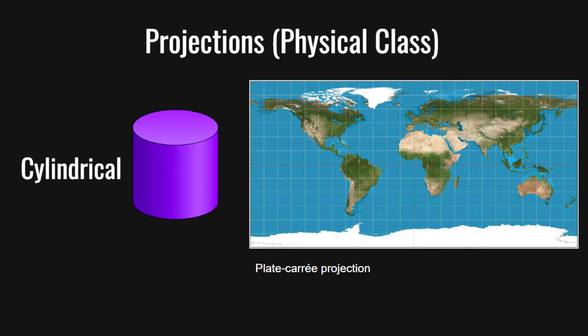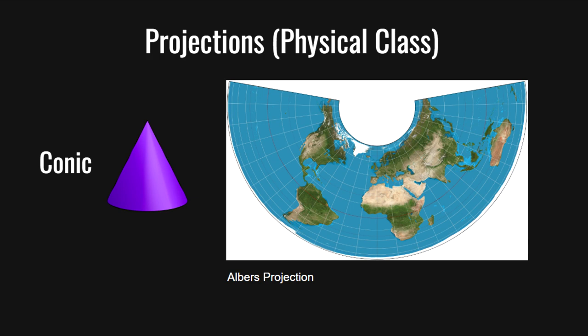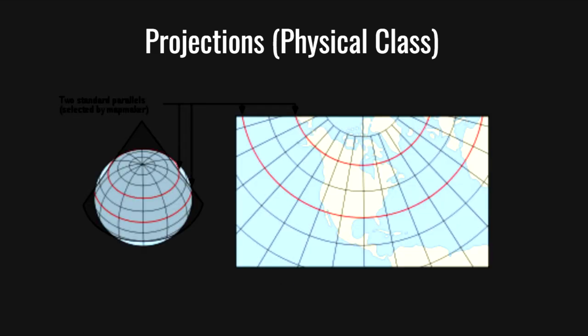How do we know what shape to project our surface onto? This again depends on your use case. If you're looking to make a projection of the whole world, a cylinder would be your best option. For mid-latitude areas such as Canada or the United States, a conic projection would be ideal, as the cone can be easily placed such that its tangent — the point where the cone touches the spherical globe — is at the mid-latitude regions.